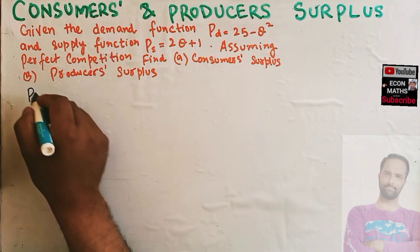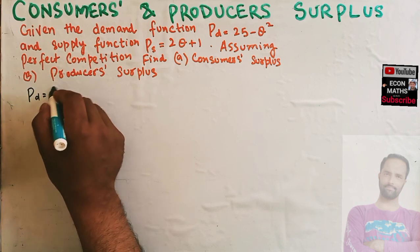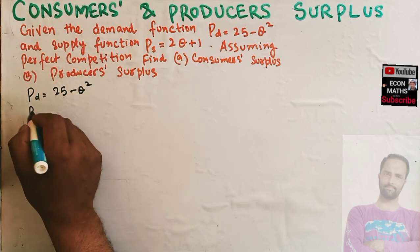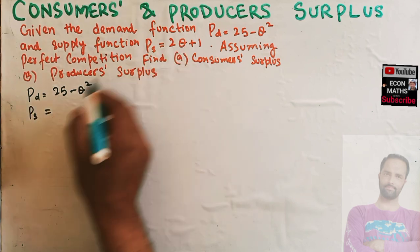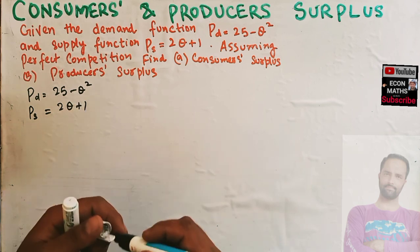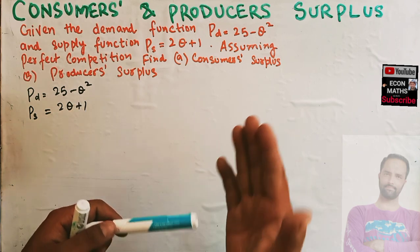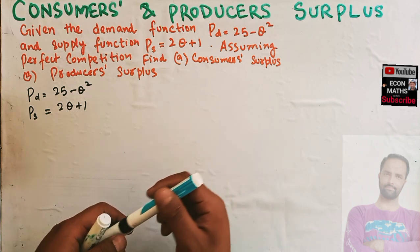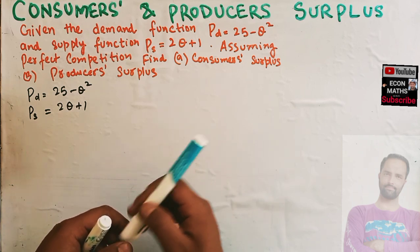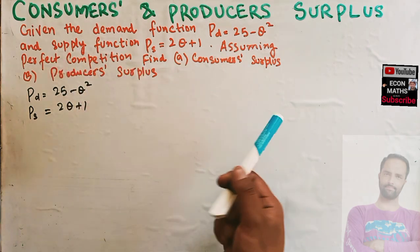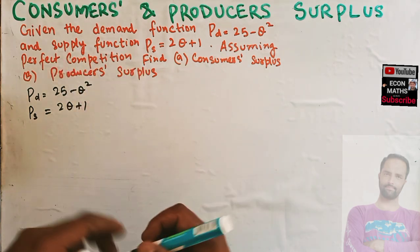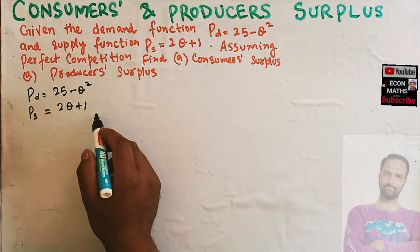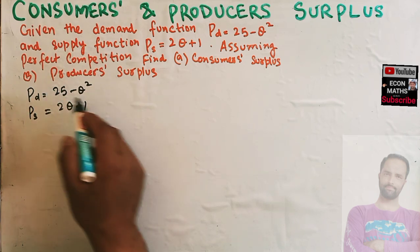So we are given the demand function pd = 25 minus q squared, and the supply function ps = 2q + 1. We need to find out the consumer surplus and producer surplus. First we need to see what we are given — we are told that there is perfect competition. When we have perfect competition, we will equate demand equal to supply to get the equilibrium price and quantity.